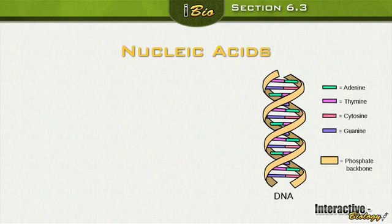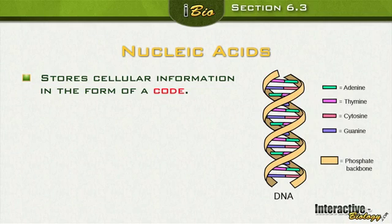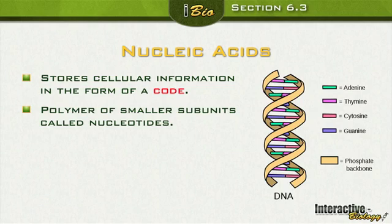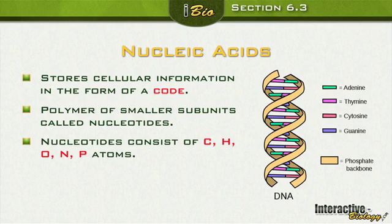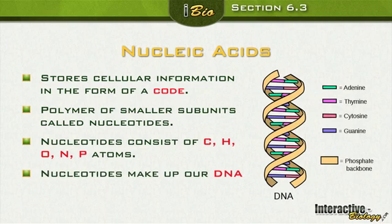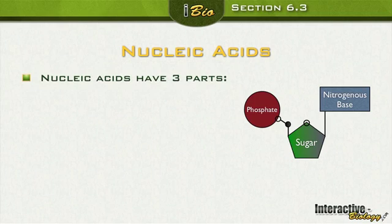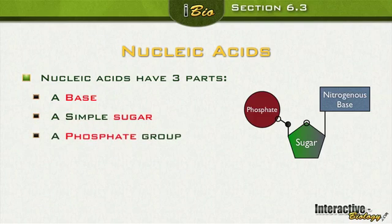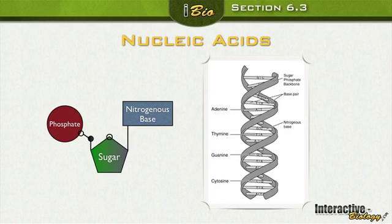Nucleic acids store cellular information in the form of a code, and they are polymers made up of individual subunits called nucleotides. Nucleotides consist of carbon (C), hydrogen (H), oxygen (O), nitrogen (N), and phosphorus (P). Nucleic acids have three parts: a base, a simple sugar, and a phosphate group. You can see the nitrogen base and the sugar phosphate in the DNA structure illustrations.